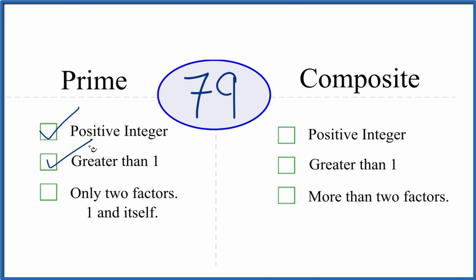79 is greater than 1. And are there only two factors, one and itself? So 1 and 79. 1 times 79, those are factors of 79. But are there any more? 2 doesn't go into 79 evenly, 3, 4...